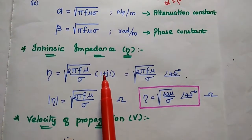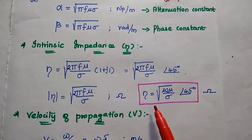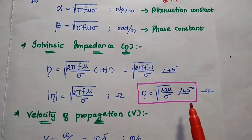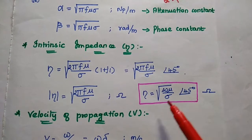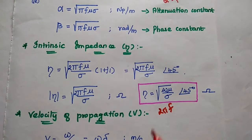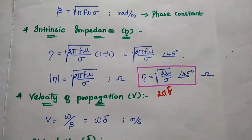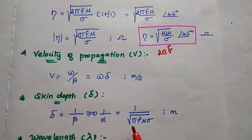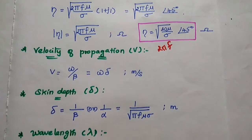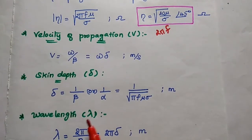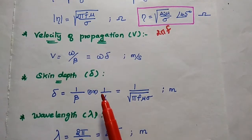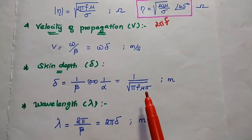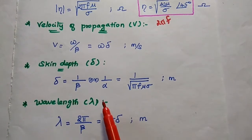The next formula is intrinsic impedance for a good conductor medium, represented as eta equal to square root of omega mu by sigma, with an angle of 45 degrees. Its unit is ohm, where omega equals 2 pi f. The velocity of propagation V equals omega by beta, and 1 by beta is also known as delta, which represents the skin depth. Delta equals 1 by alpha equals 1 by square root of pi f mu sigma, with unit meter.